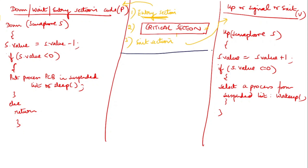Let's take an example. I define semaphore S and initialize it with value 3. Process P1 wants to enter the critical section. Before entering, it executes the entry section code — the down or wait system call. This code first decrements the semaphore value, so the value becomes 2. It checks if s.value is less than 0 — it is not, so the else part executes.